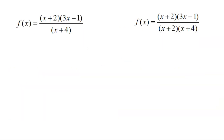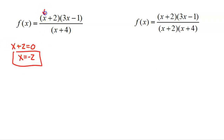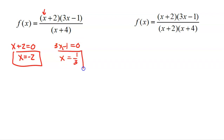Let's dive right into some examples. In these first two examples, we see rational functions that are already factored, which makes the math way simpler. In the first example, I'm looking at what values make the numerator zero. If X plus two equals zero, that means X equals negative two. And for the other factor, three X minus one set equal to zero: add one, divide by three, I get one third. So there's another number that makes my numerator equal to zero.